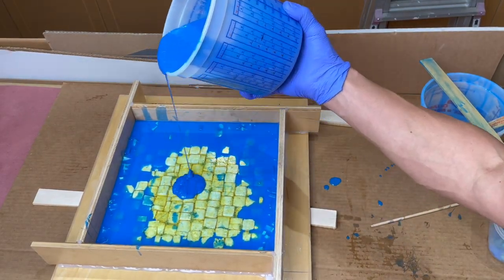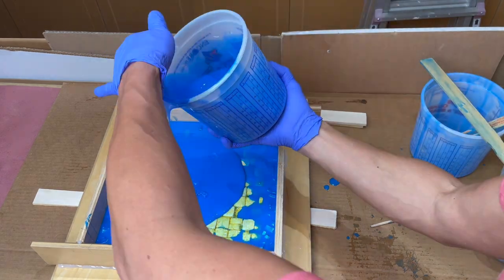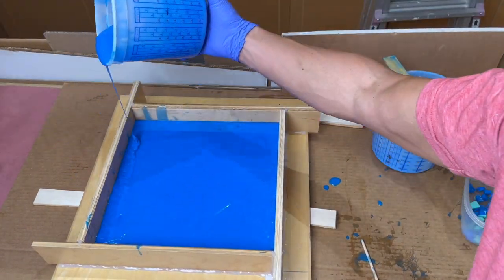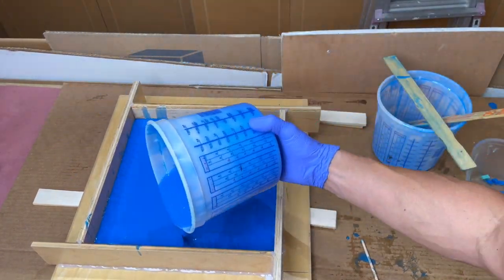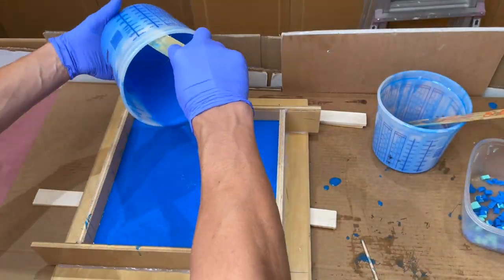So after about 45 minutes I'll top it off so there's at least a half inch thickness over the piece. One nice thing about this silicone is you can add to it anytime and it will always bond to itself. I could come back tomorrow or next week and top it off some more if I wanted.